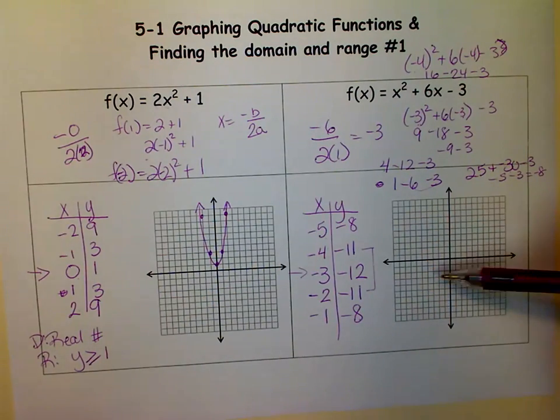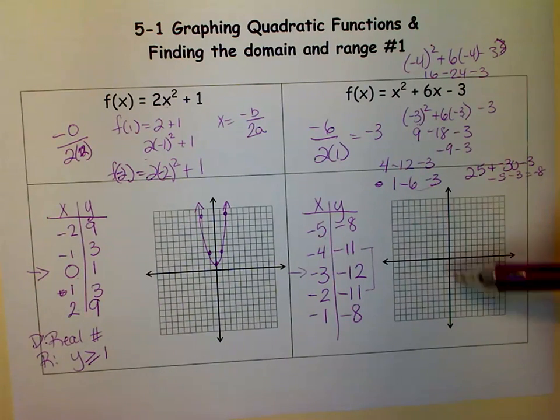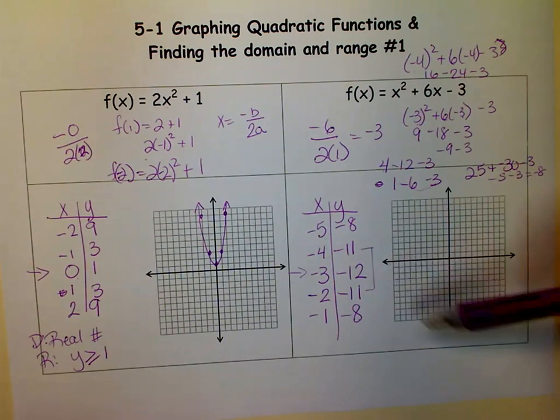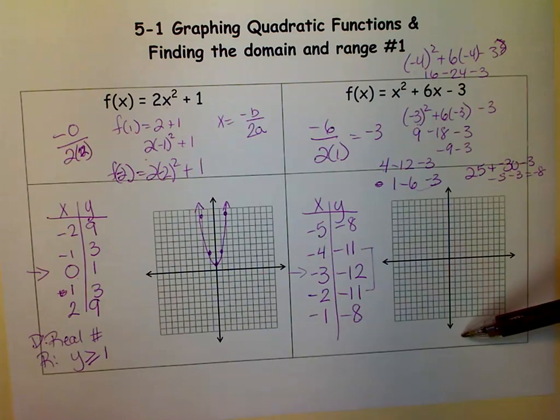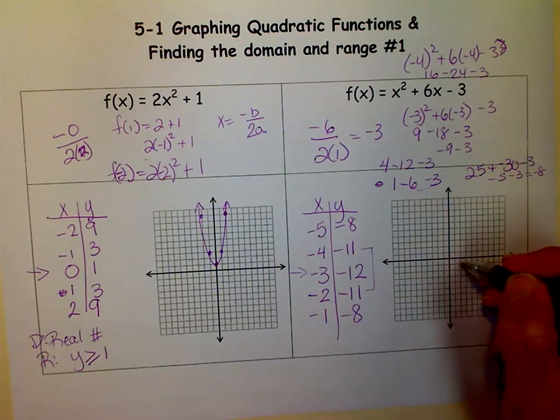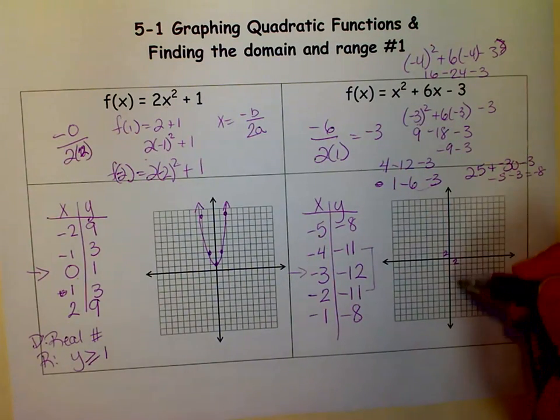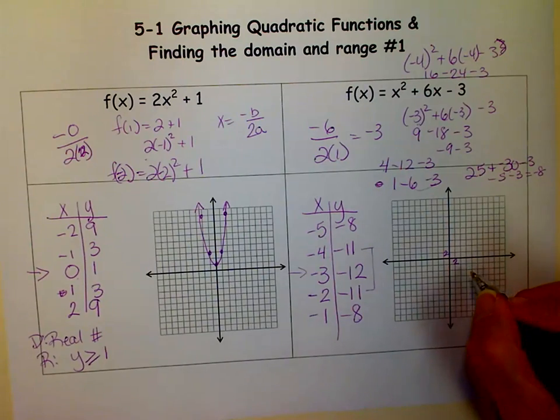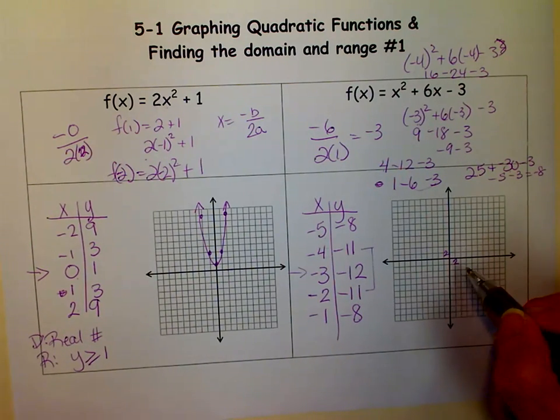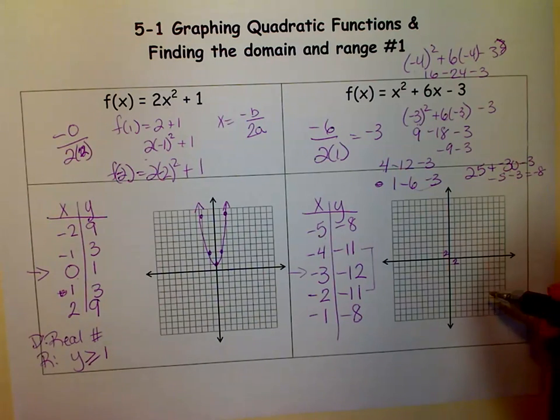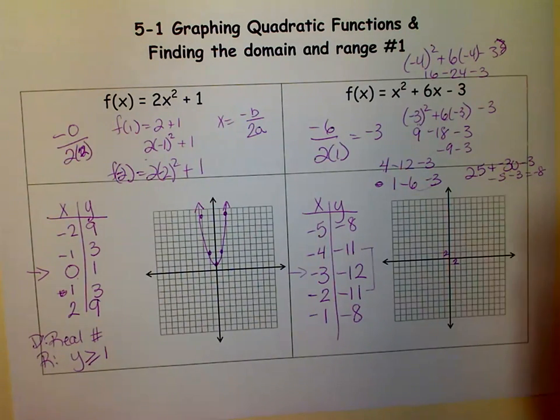So notice that my graph only goes 10 out and 10 up, and I've got a negative 12. So the couple ways you can do this. You could add a couple more down here, or what you can do is you can count by 2's. But if you count by 2's, you need to write that on the graph that you're counting by 2's. And I write 1 on the y-axis and 1 on the x-axis, so they know I'm counting by 2's both directions. And I like to, if I can, count the same in both directions to keep my parabola still the same shape, just a little bit smaller.